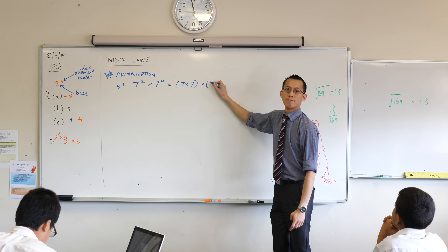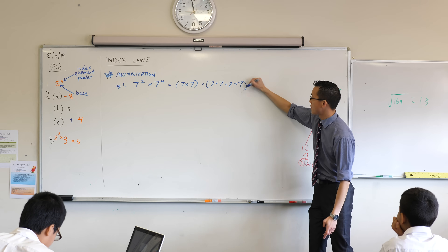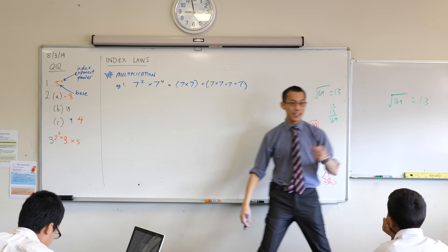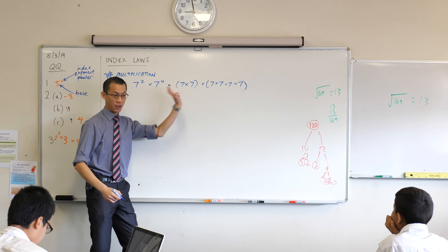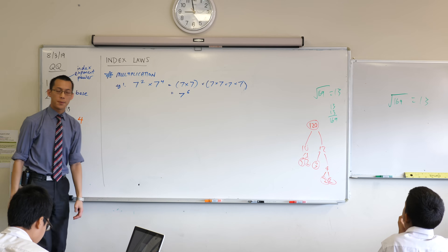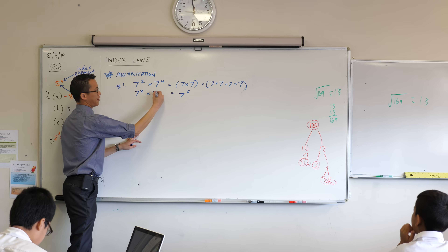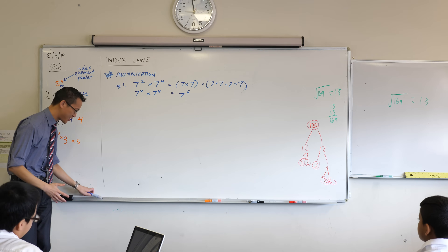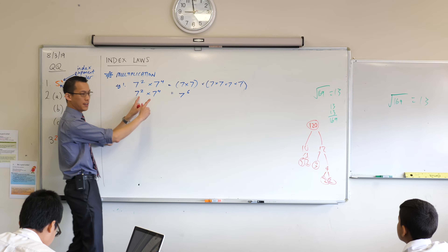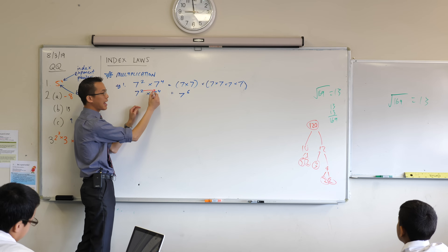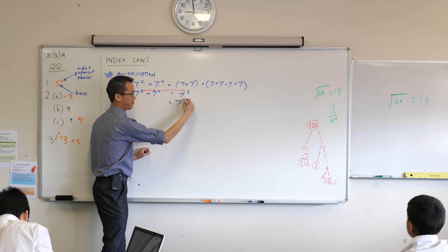Seven to the power of four, of course, is seven times seven times seven times seven. How many sevens do I have written on the board on the right-hand side? Six — you can literally count them: one, two, three, four, five, six. So my abbreviation for this, rather than writing all those, is seven to the power of six. Now, there's a really straightforward connection between the left-hand side and the right. Louise, what are you seeing? You just add the powers — two and four, if you add them together, you get six. So what you've got is really seven to the power of two plus four.